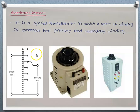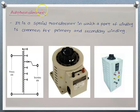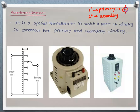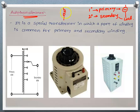A conventional transformer consists of two windings — one is called the primary winding and the other is called the secondary winding. The primary is connected to supply and the secondary is connected to load. But the autotransformer contains only one winding, where part of this winding acts as a primary and the remaining part acts as a secondary.